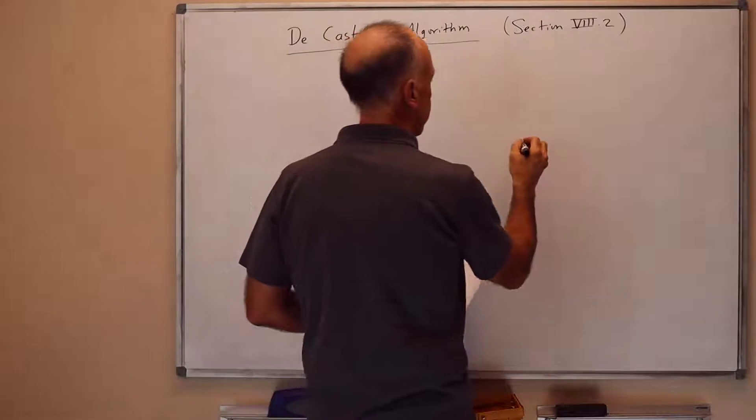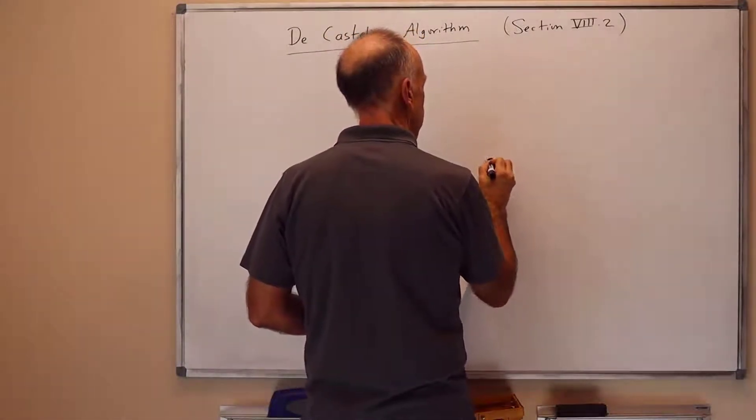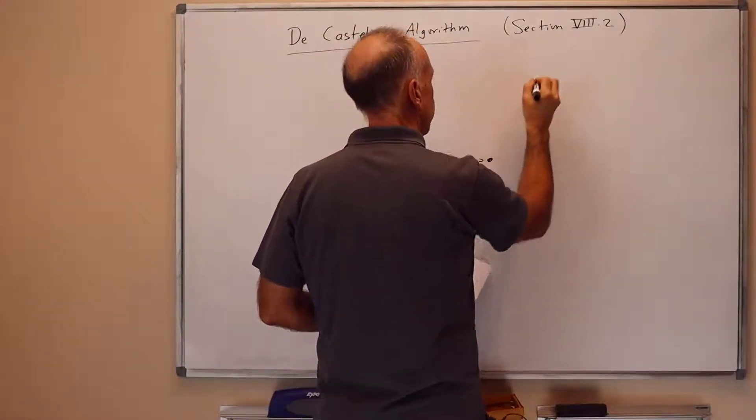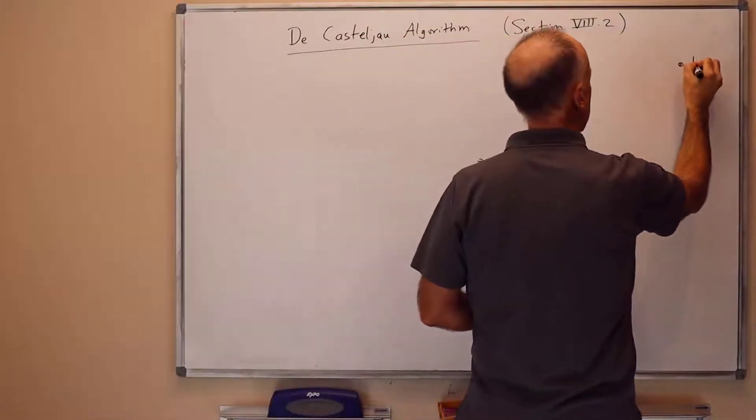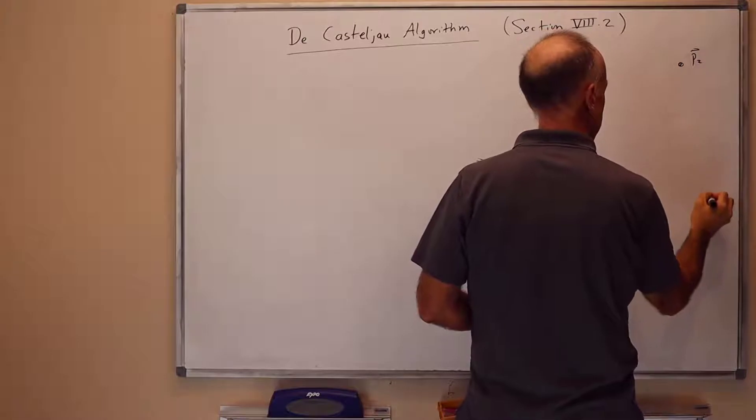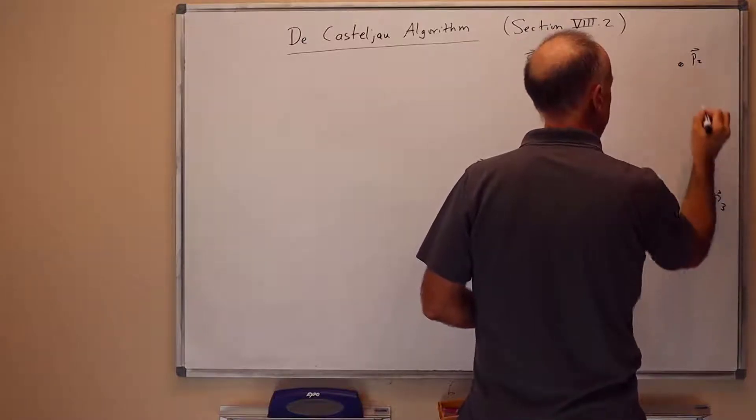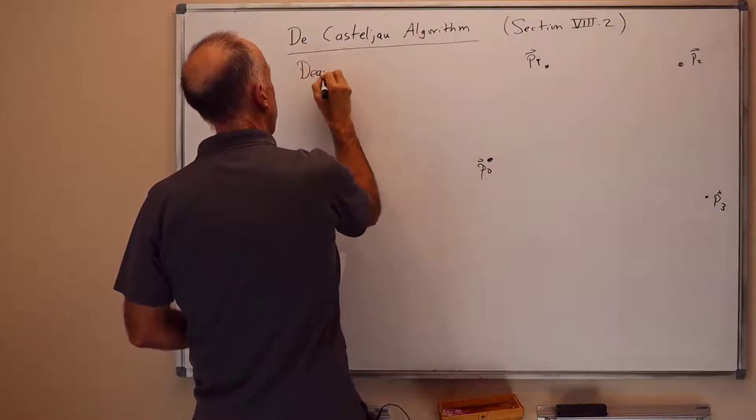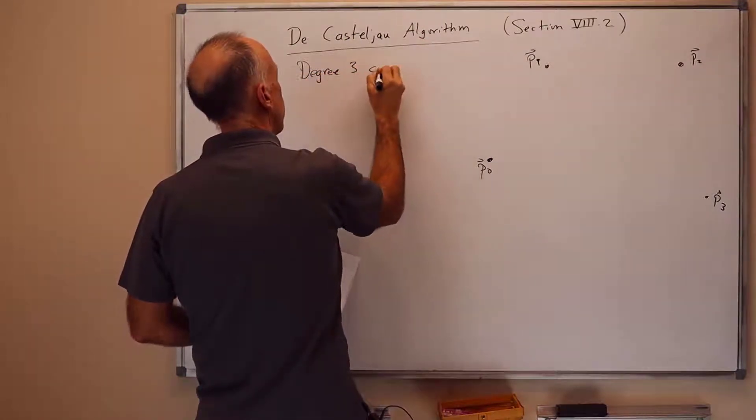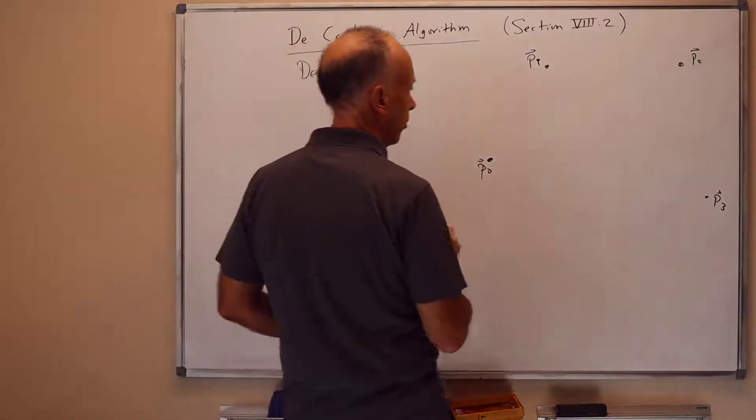We've got four control points for degree 3 curve: P0, P1, P2, and P3. So this is for degree 3 curves, four control points.